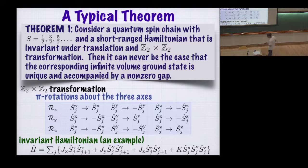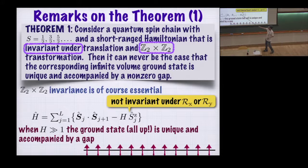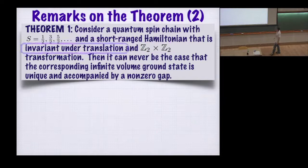I want to quickly convince you that all these conditions are really necessary. First, I assume Z2 cross Z2 invariance, and of course certain symmetry is necessary. For example, if you add a uniform magnetic field and break this Z2 cross Z2 invariance, then if h is very large, the ground state is the all-up state—it's unique. To excite it you have to flip a spin, paying about 2h. So of course there is a gap, confirming that certain symmetry is necessary.